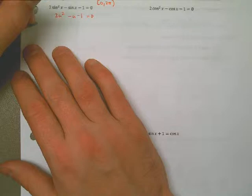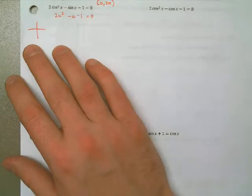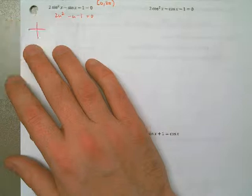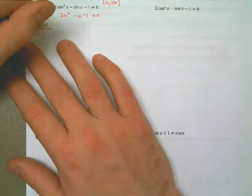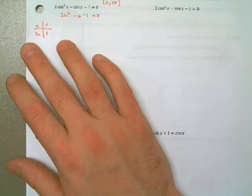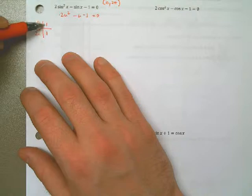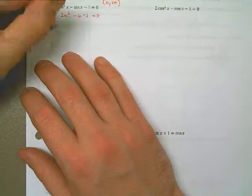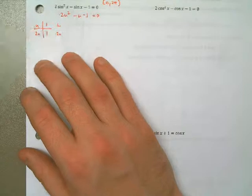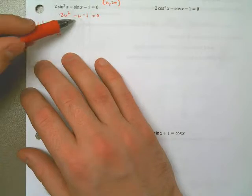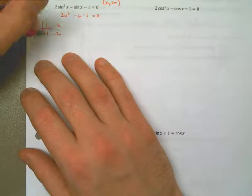Here's my method. u times 2u is 2u². 1 times 1 is 1. I did that because this comes from the first term, and this comes from the last term. Now, if I multiply across, that gives me 1 and 2, 1u and 2u. I need these values to add up to the term in the middle, which is negative u. The only way that that happens is if this is negative, which means this had to be negative.